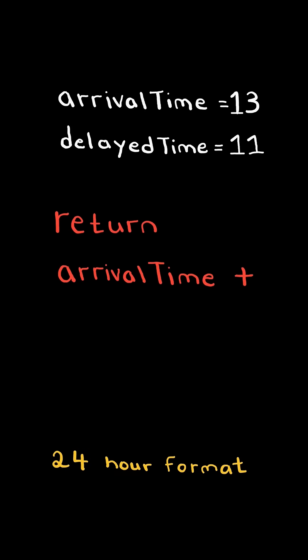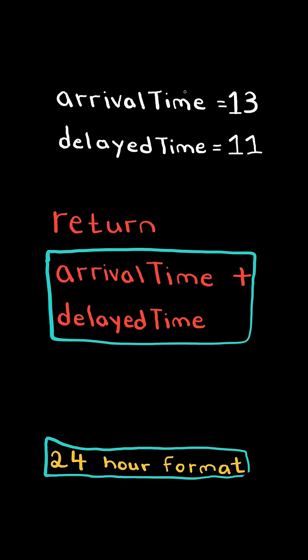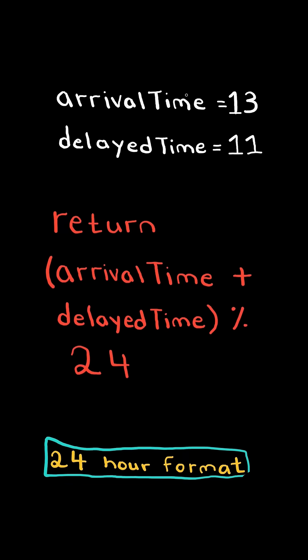All we simply need to do is return the sum of arrival time and delayed time. This result could be greater than or equal to 24. To make sure we get numbers less than 24, and therefore in a 24-hour format, we will modulus the sum by 24.